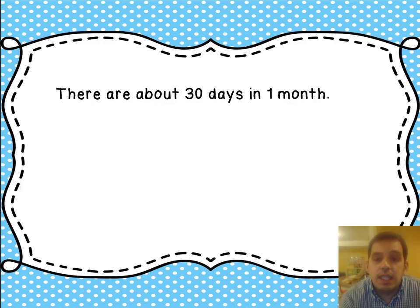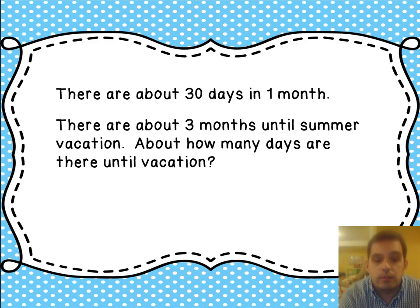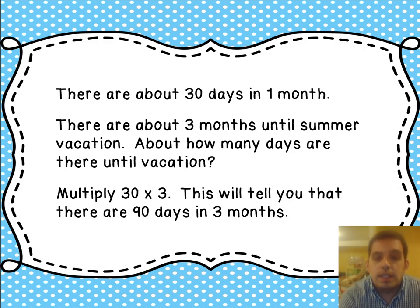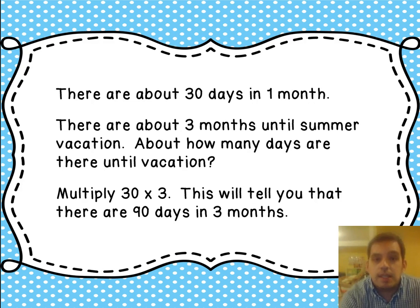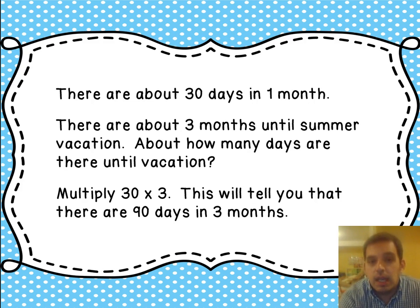There are about 30 days in 1 month. There are about 3 months until summer vacation. About how many days are there until vacation? We're going to take 30 — the number of days in a month — and multiply it by 3, the number of months in our question. This tells you there are 90 days in 3 months. So the answer is there are about 90 days until vacation.